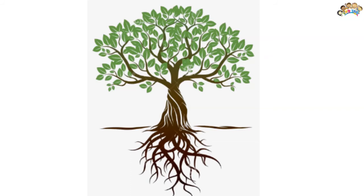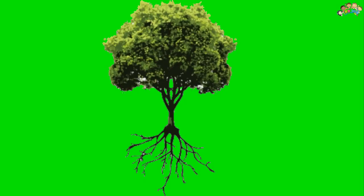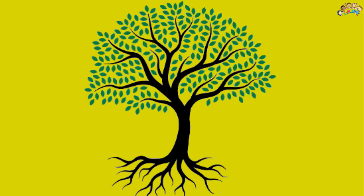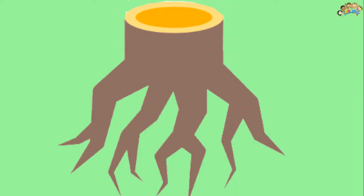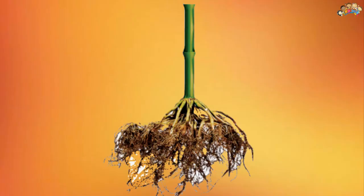Certain adventitious roots, known as aerial roots, either pass for some distance through the air before reaching the soil or remain hanging in the air. Some of these, such as those seen in corn, maize, screw pine, and banyan, eventually assist in supporting the plant in the soil. In many epiphytic plants, such as various orchids, aerial roots are the primary means of attachment to non-soil surfaces such as other plants and rocks.